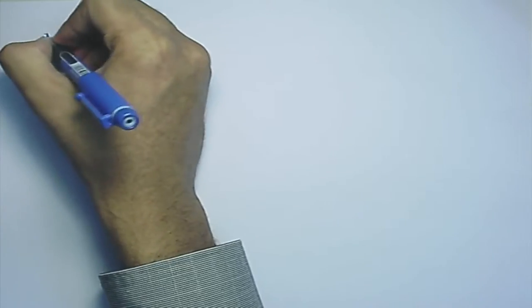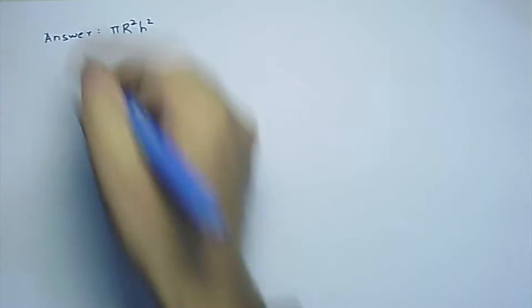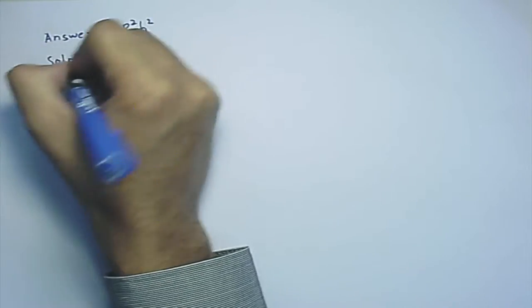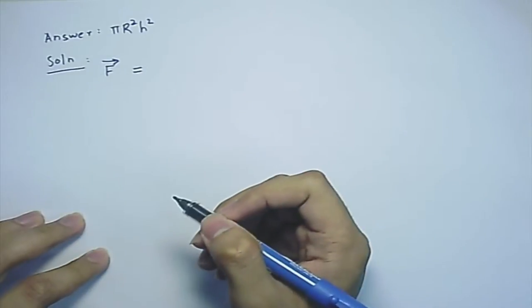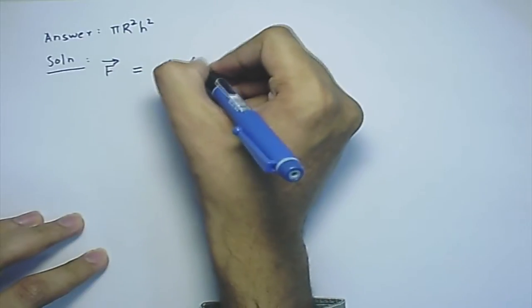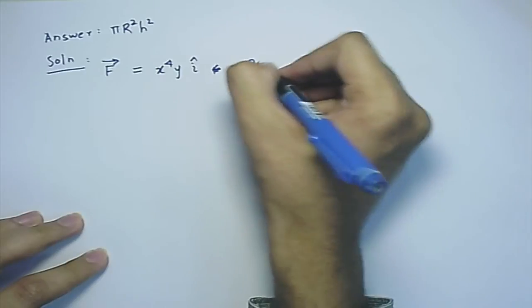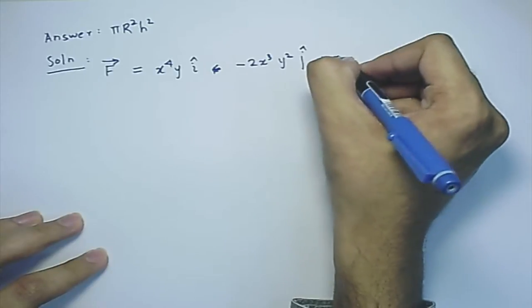Let's start solving the problem. The answer, if you just want to check it directly, is pi r squared h squared. The value of the vector field is given as x to the power 4y i-hat minus 2x cubed y squared j-hat plus z squared k-hat.